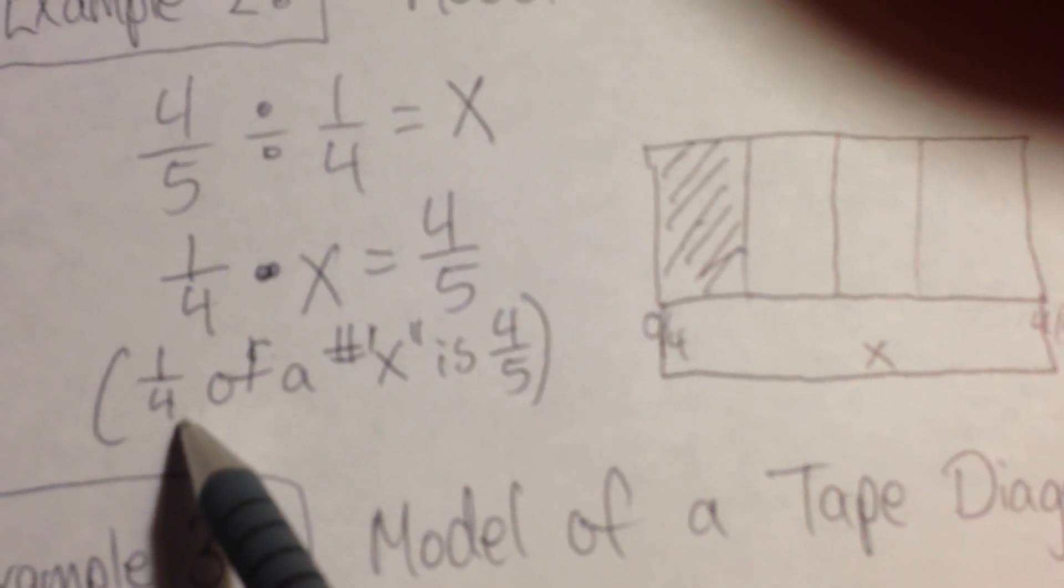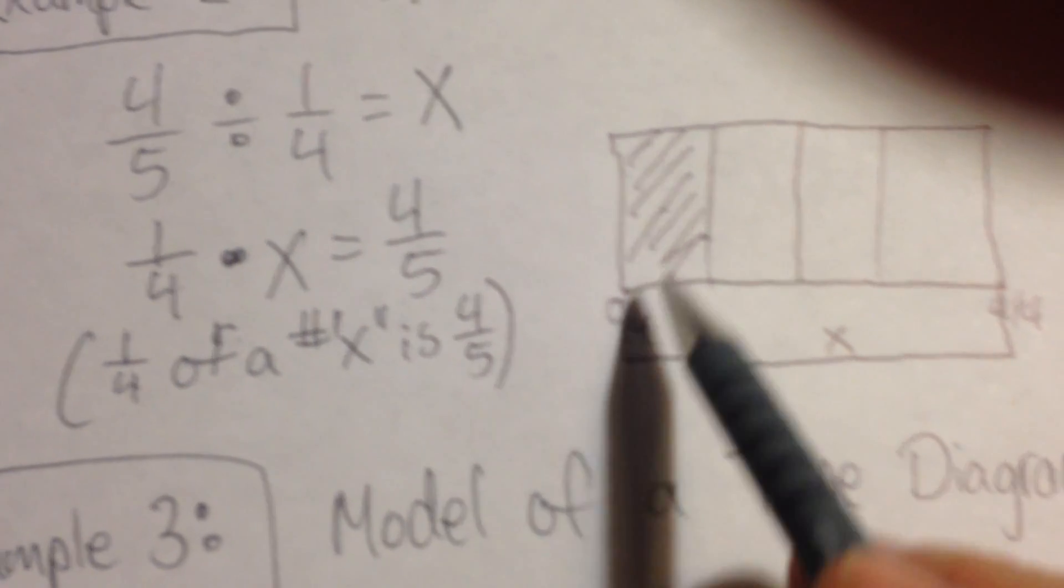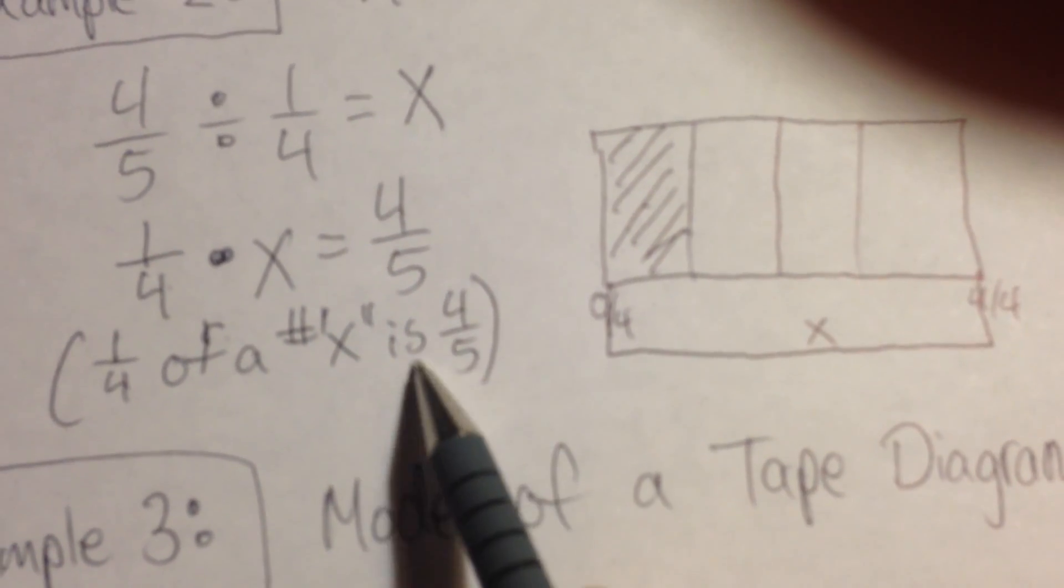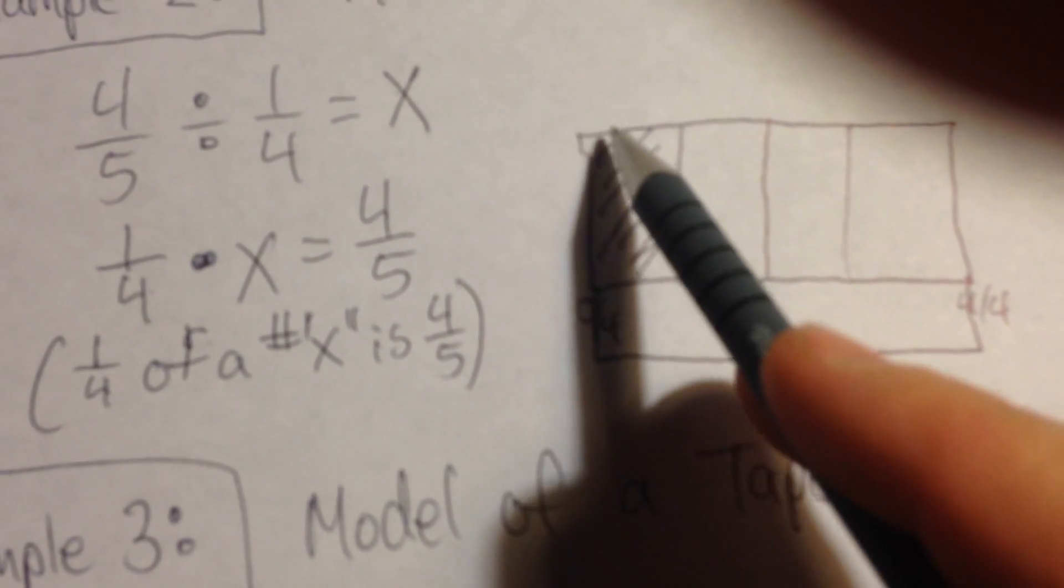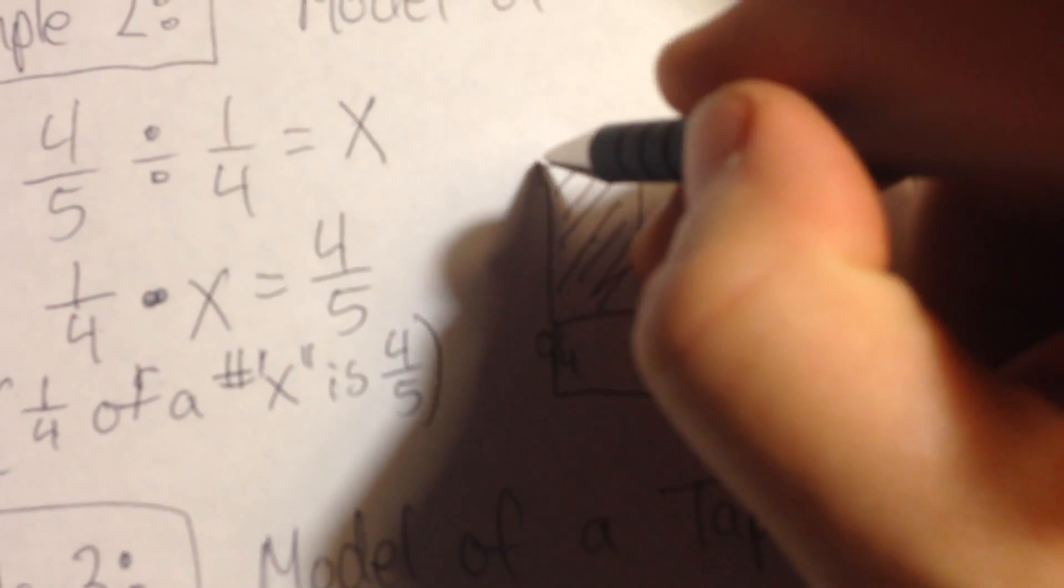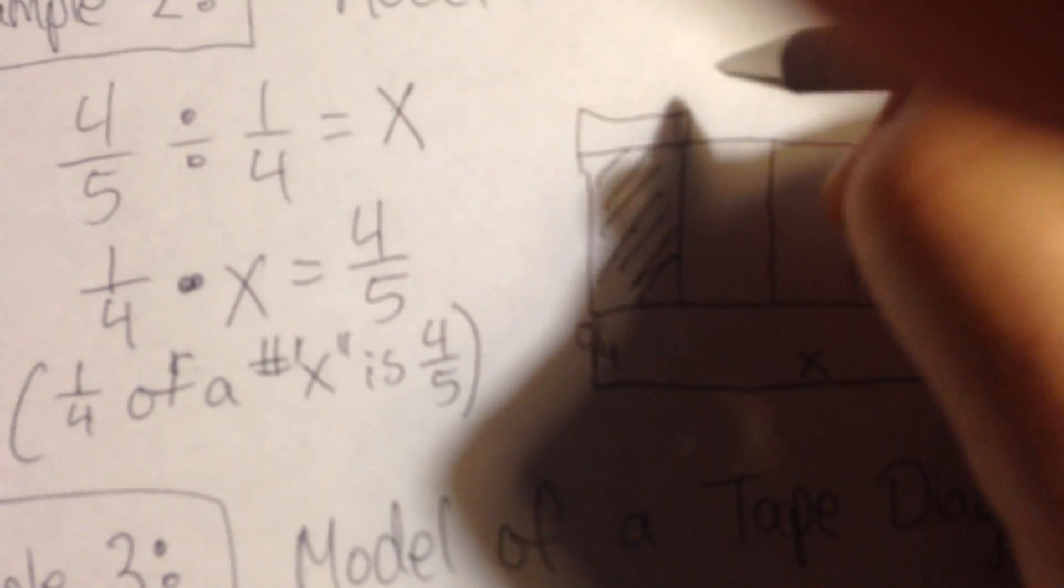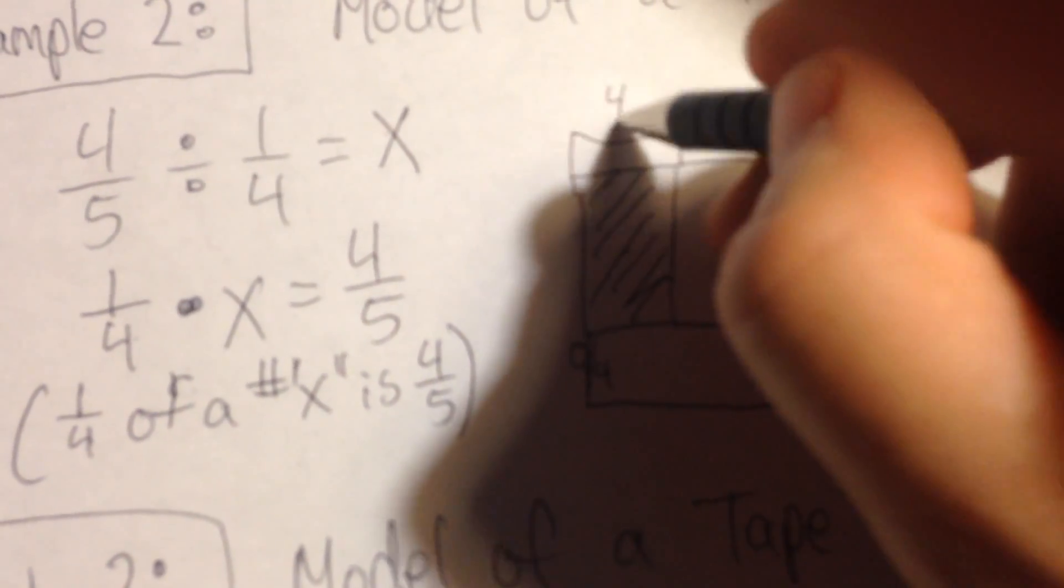Now if you look at my interpretation, one-fourth of x. So I have one-fourth of x is how much? Four-fifths. So I could draw a bracket. You could draw a triangle as your bracket if you wanted. So this is four-fifths.